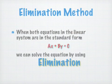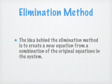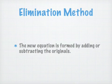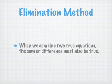When both equations in a linear system are in the standard form—that's ax plus by equals c—we can solve the system using elimination. The idea behind the elimination method is to create a new equation from a combination of the original equations in the system. The new equation is formed by adding or subtracting the originals. When we combine two true equations, the sum or difference must also be true.